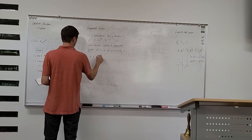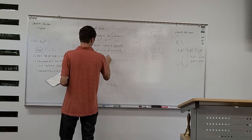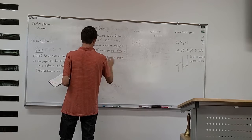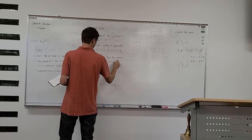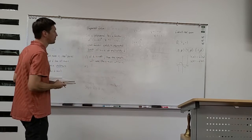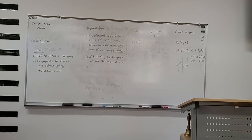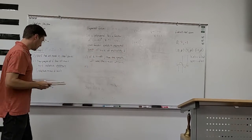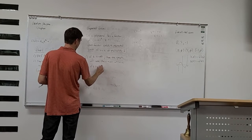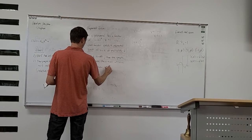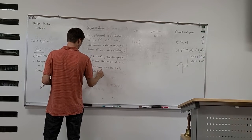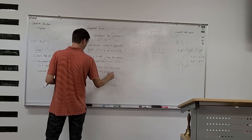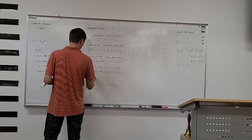If k is odd, the graph will cross the x-axis at x equals a. If k is even, the graph touches but does not cross the x-axis at x equals a.